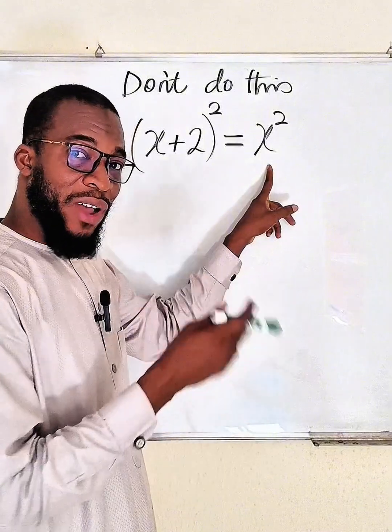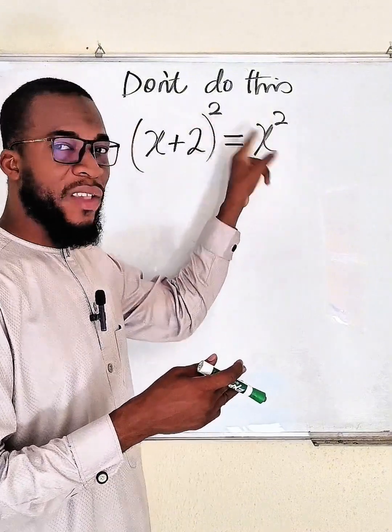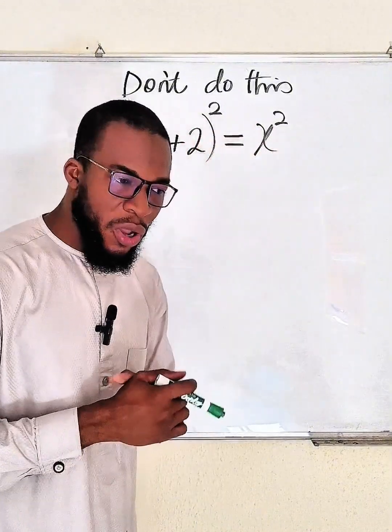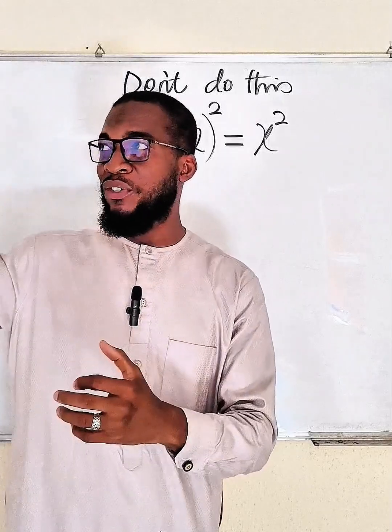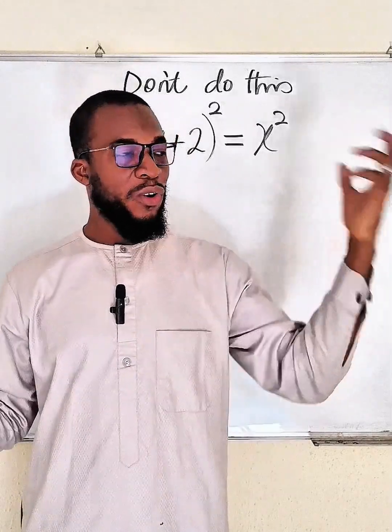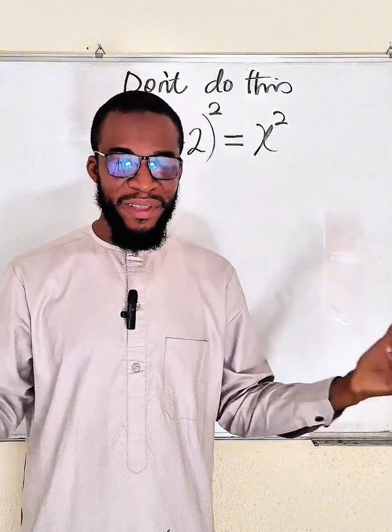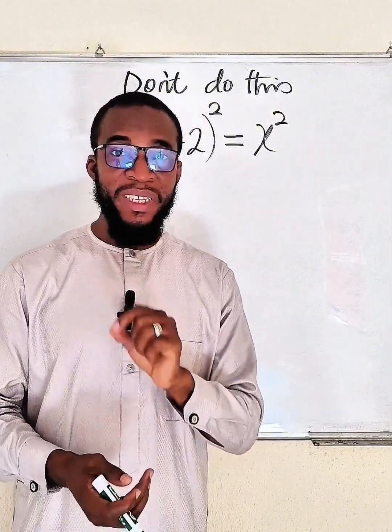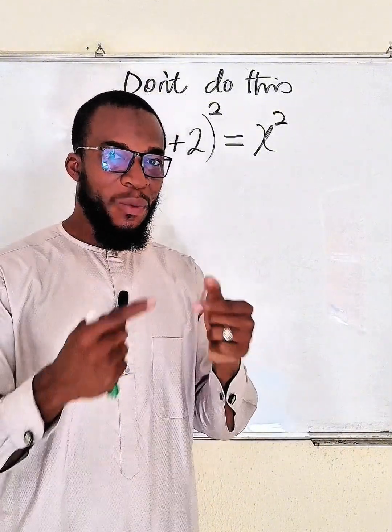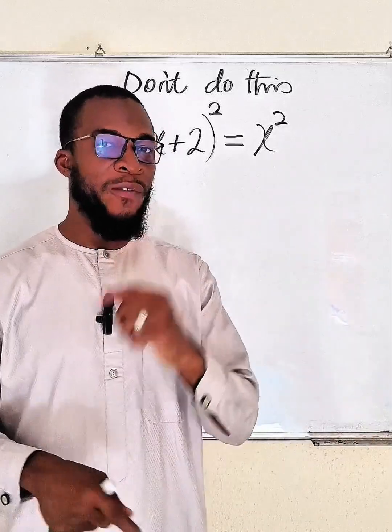Though logically, if you have something squared on the other side equal to another thing squared, it literally means those things are equal. But mathematically speaking, once you equate the bases, you may end up falling in trouble.